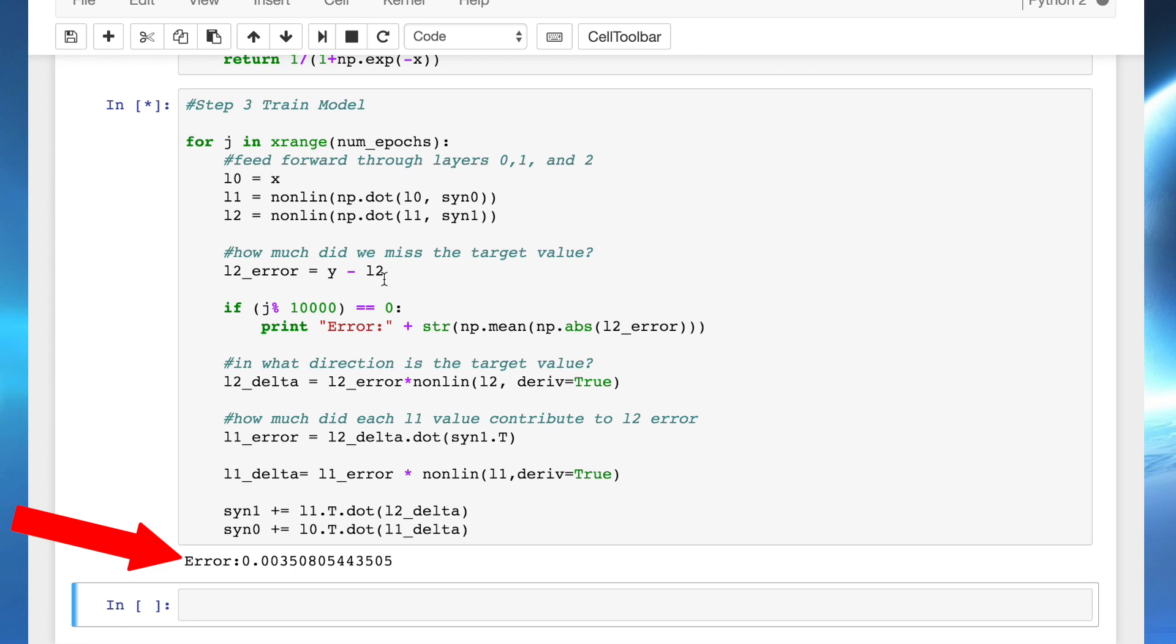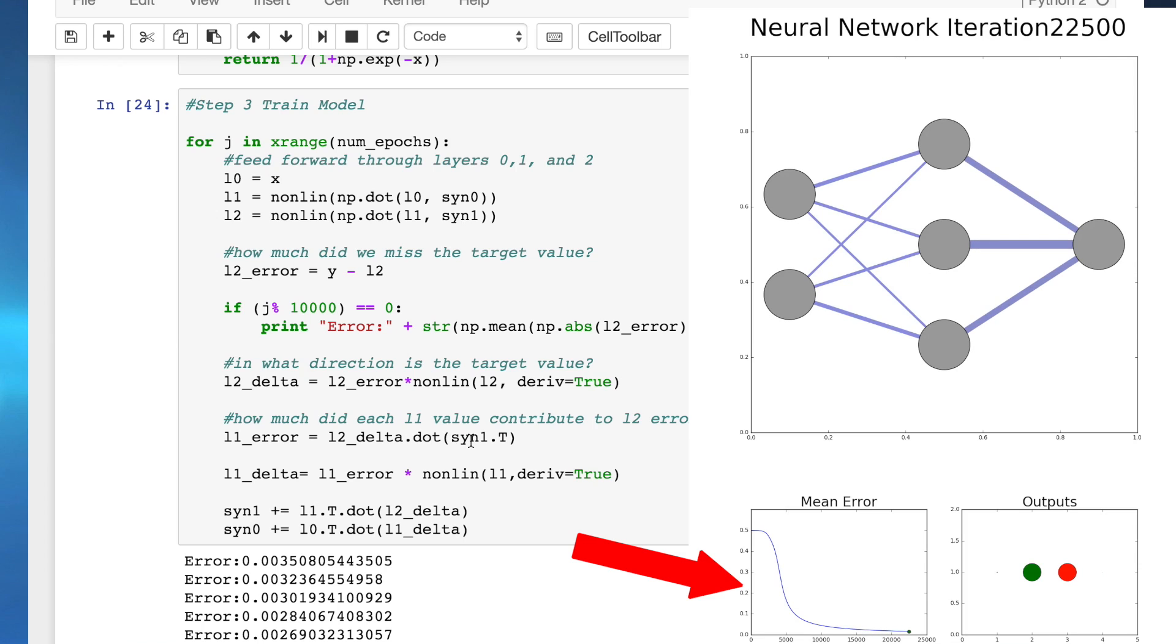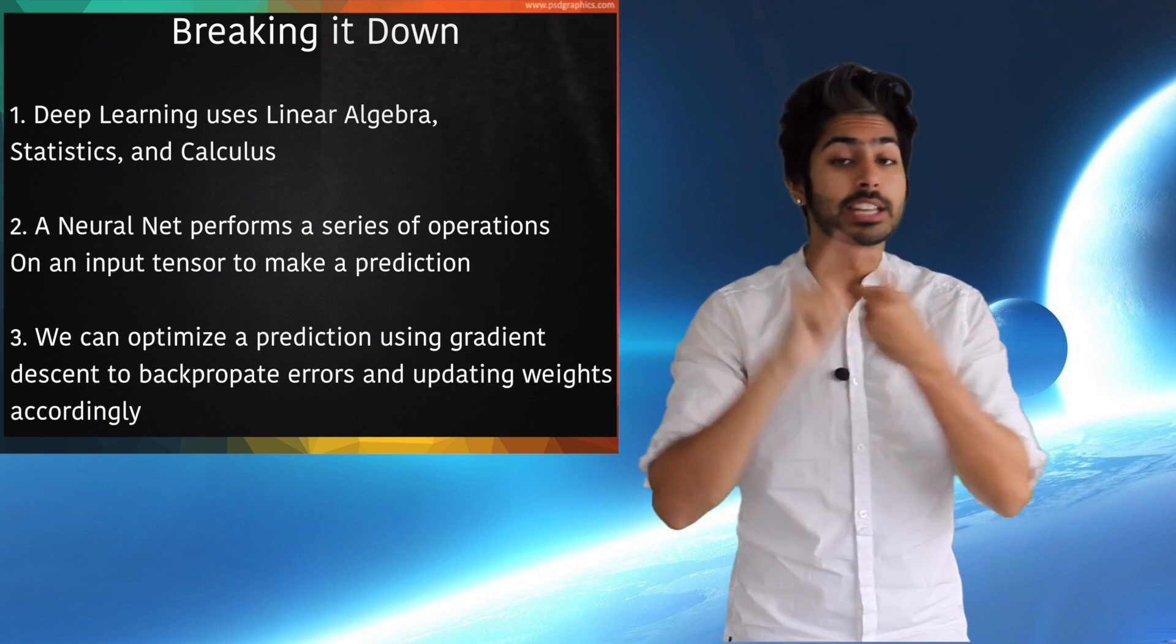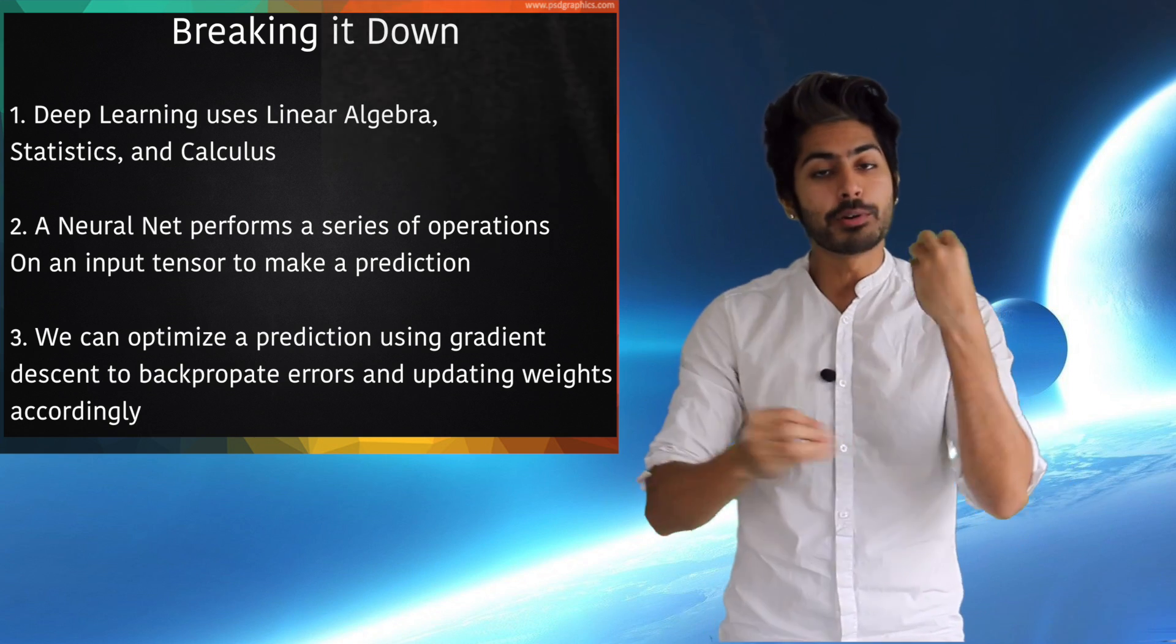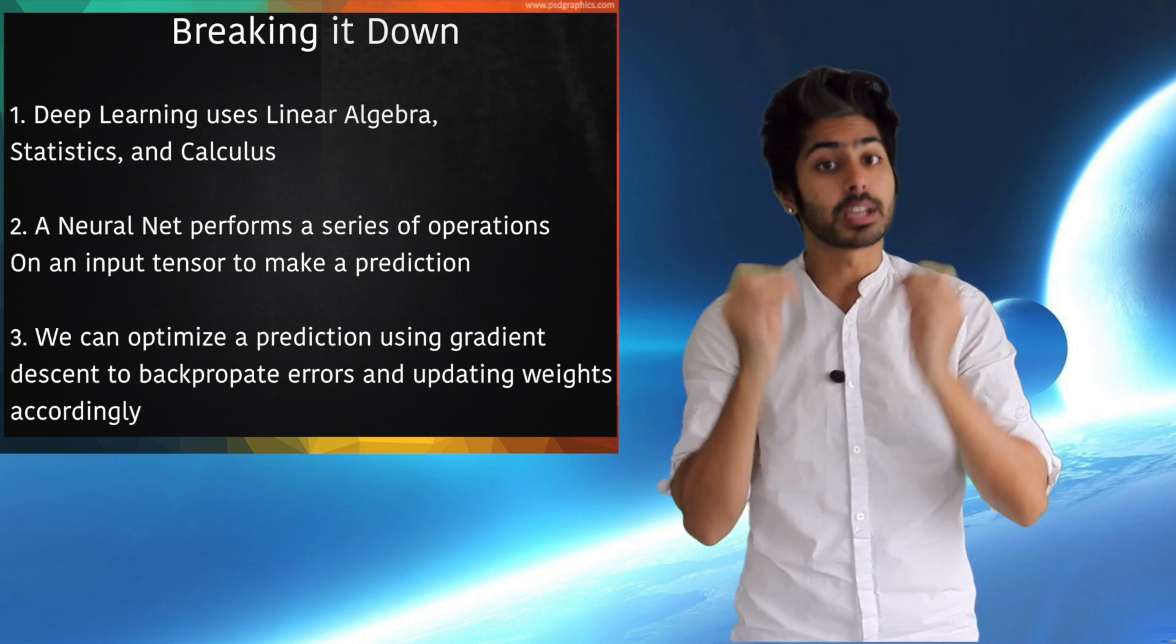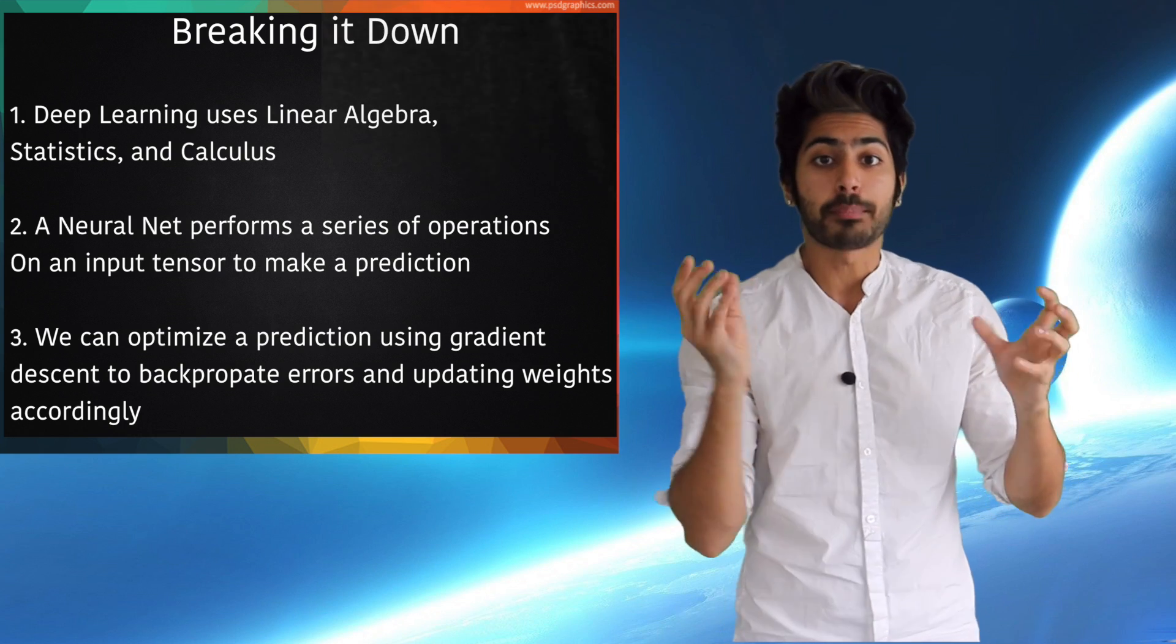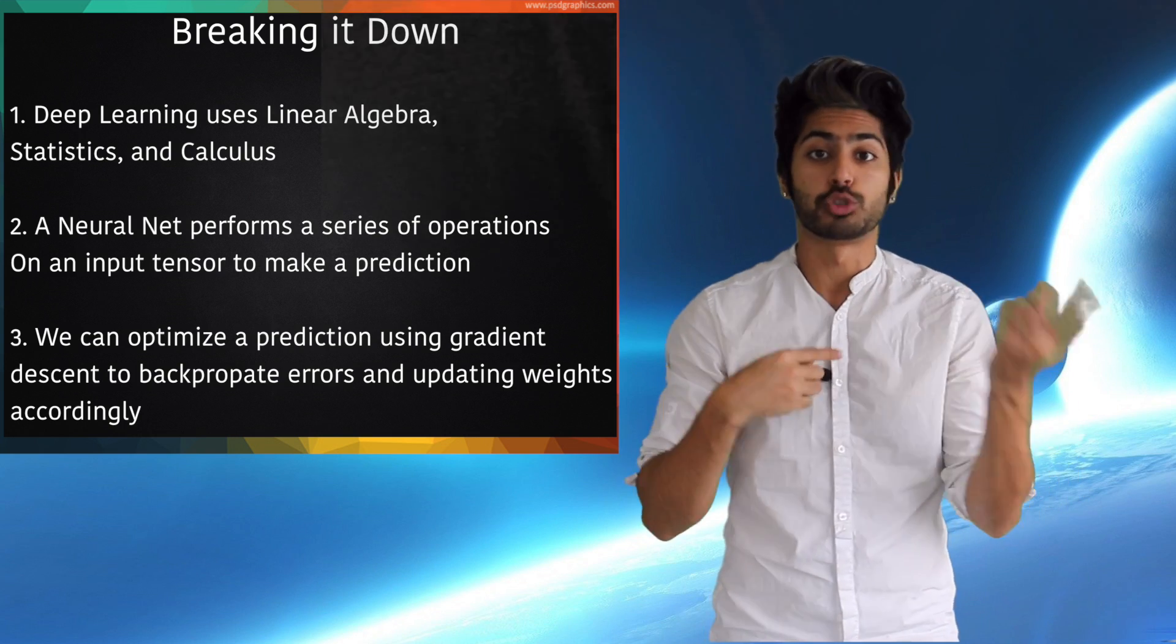When we run our code, we can see that the error values decreased over time, and our prediction eventually became very accurate. So to break it down, deep learning borrows from three branches of math: linear algebra, statistics, and calculus. A neural net performs a series of operations on an input tensor to compute a prediction, and we can optimize our prediction by using gradient descent to backpropagate our errors recursively, updating our weight values for every layer during training.